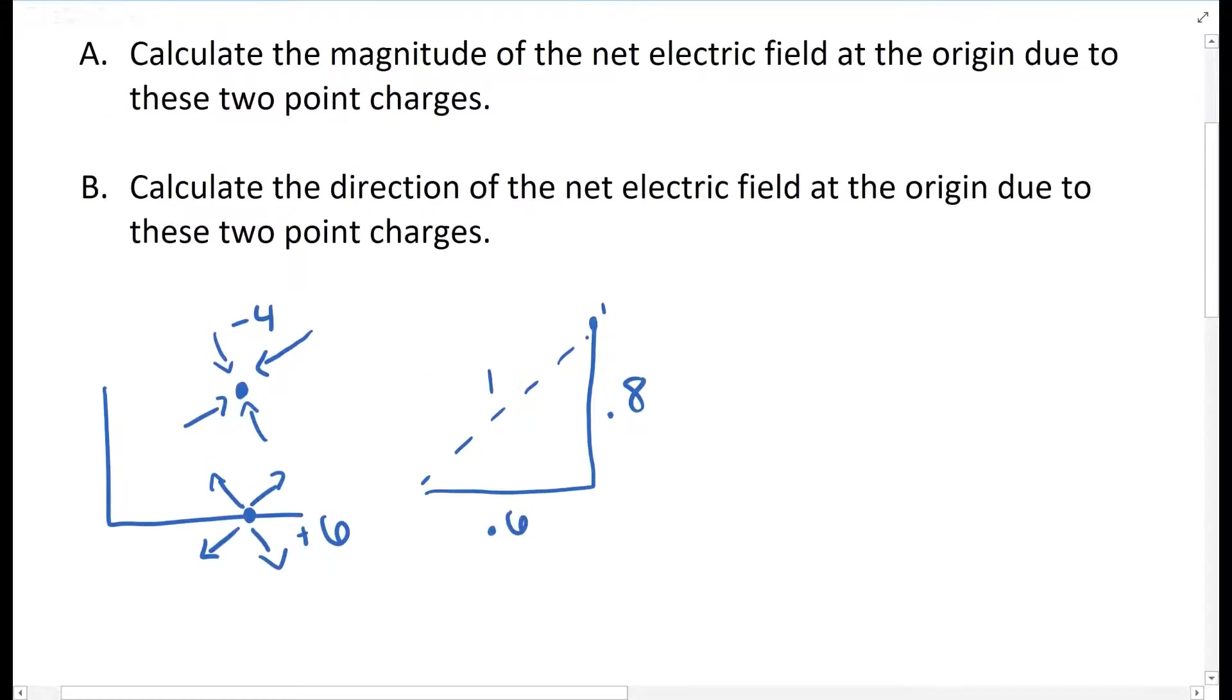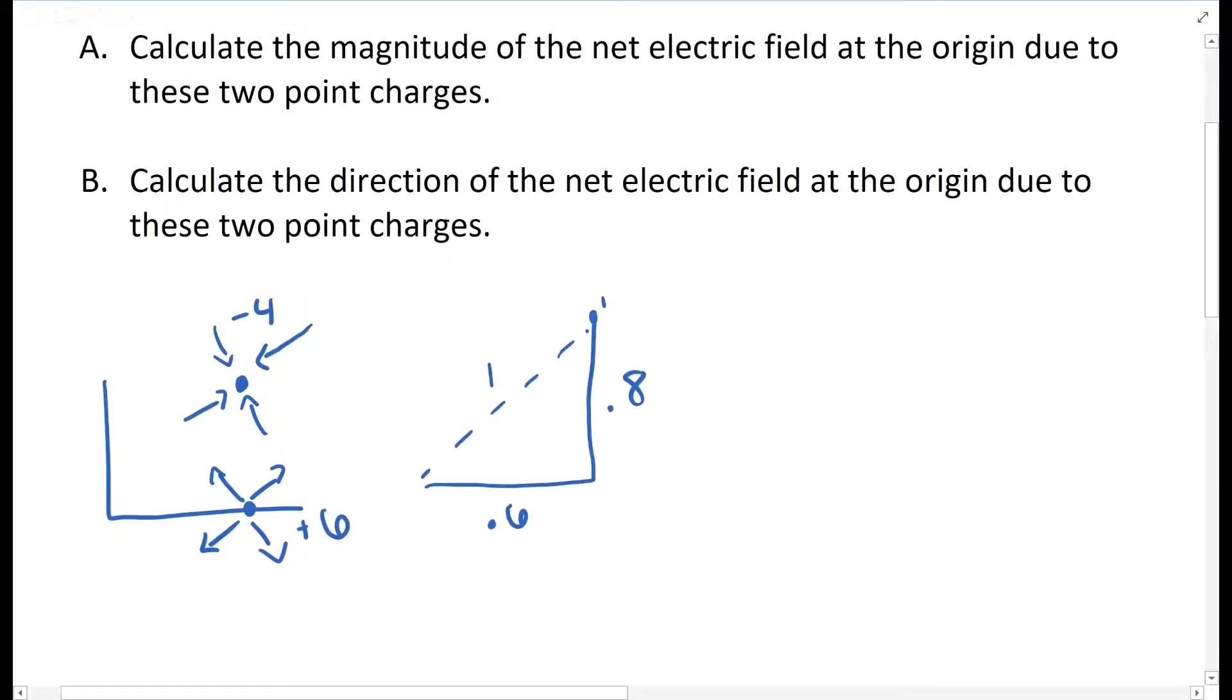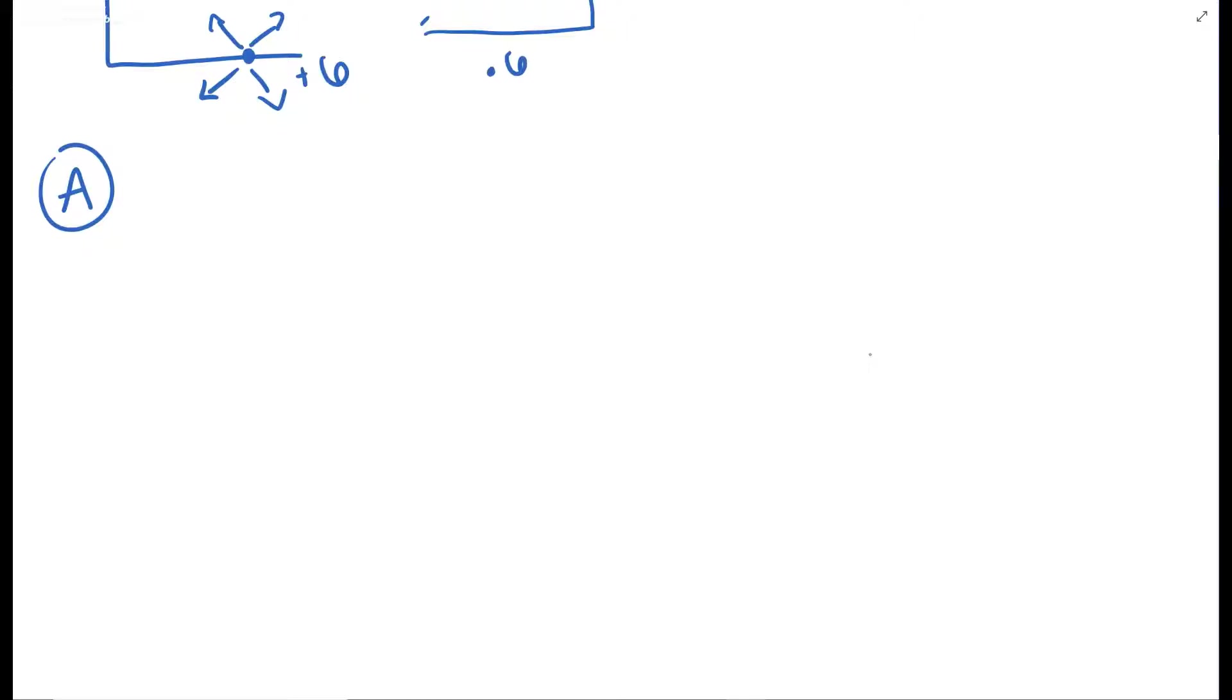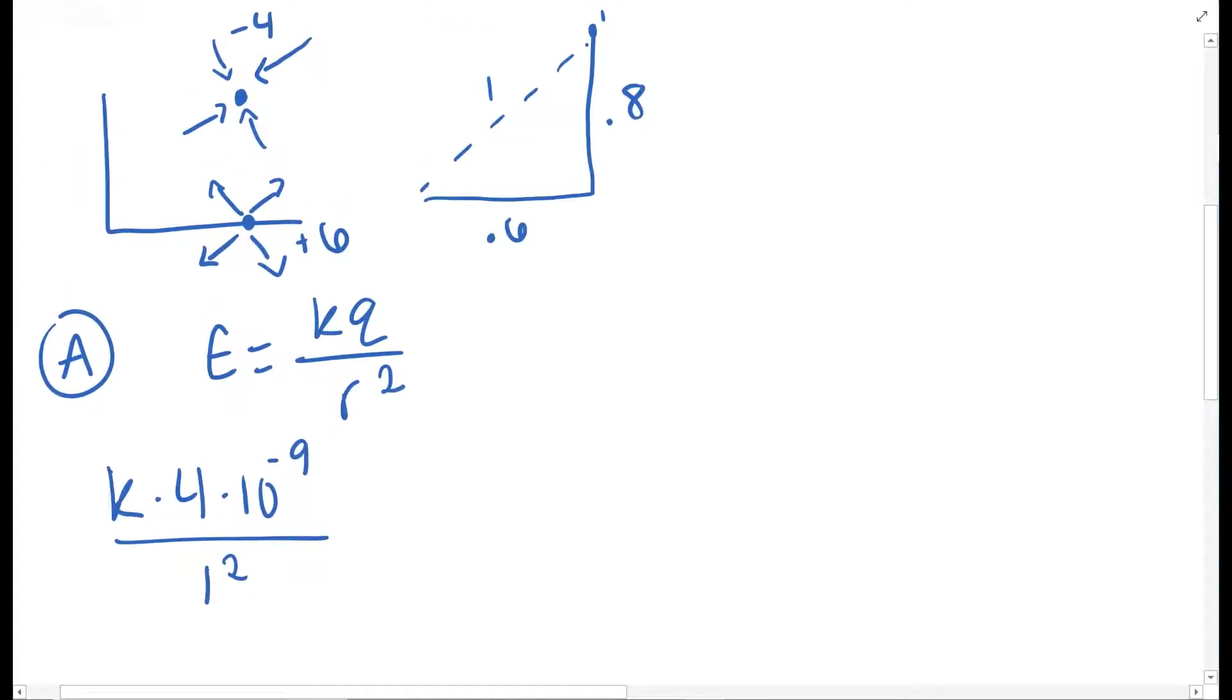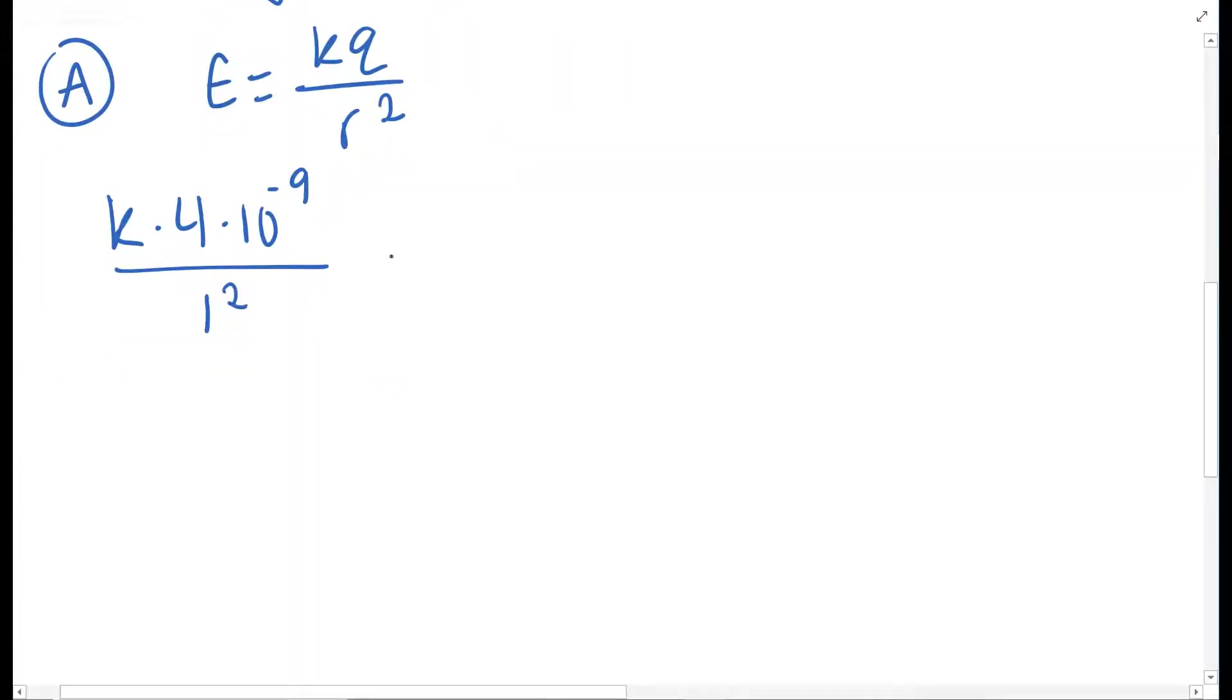So that's just setting us up. The first thing we want to do is calculate the magnitude of the net electric field at the origin due to both of these charges. For part A, we're going to start with this equation, E equals KQ over R squared. So K times the charge, 4 times 10 to the negative 9, and R is 1 squared, which is what we found. If you solve this out, this is equal to 35.95.